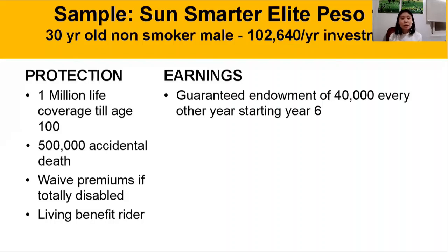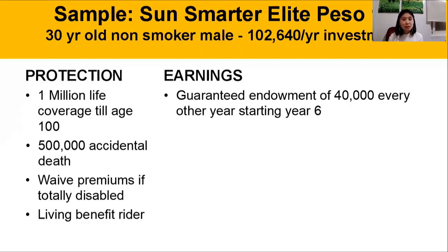On the earnings component, here is the guaranteed endowment. For this plan, you are guaranteed to get ₱40,000 every other year starting year 6. If you think about it, it's like a pension plan — a pension plan that starts even before you retire. Because from the moment you reach year 6, at 36 years old, this non-smoker male will get ₱40,000 every other year for life until age 100. That is an ideal savings component for future milestones or for retirement.